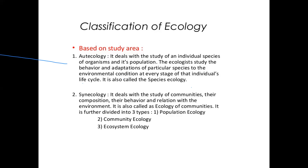In autecology, only one species is taken into consideration. Synecology deals with the study of communities — their composition, behavior, and relation with the environment. It is also called the ecology of communities. Synecology is further divided into three types: population ecology, community ecology, and ecosystem ecology.